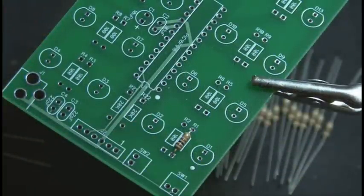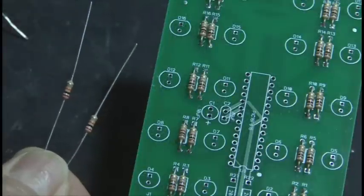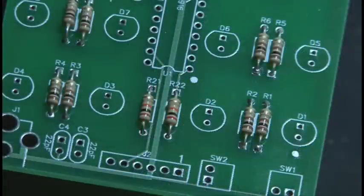Resistors are not polarized, so it doesn't matter which way they go on the board, but they look better if they're all lined up with the same colors. And then there's two 20K resistors that go in the last two resistor spots on the board.